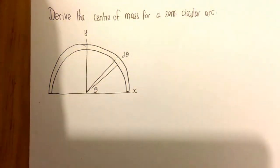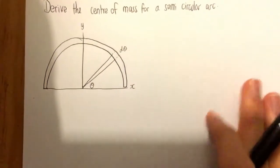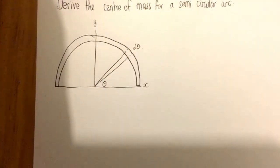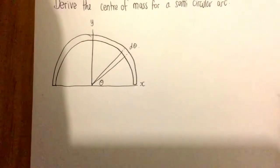Okay, so in this video we're asked to derive the centre of mass for a semicircular arc. So we've got some theta here, we've got some d theta, we've got a set of axes, we've got a semicircular arc there.